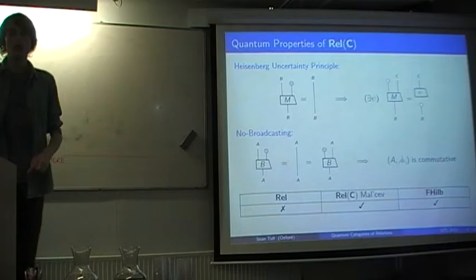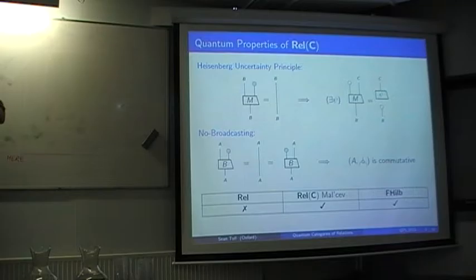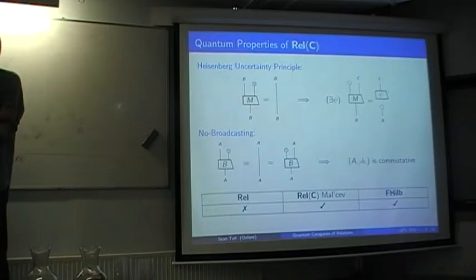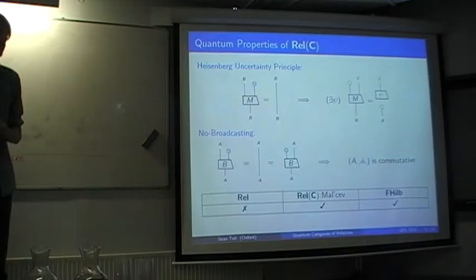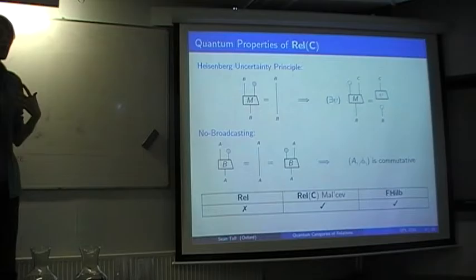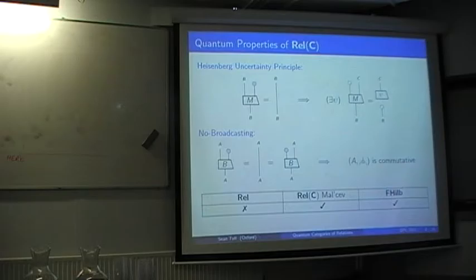Another result is the no-broadcasting theorem: if a system has a broadcasting map — a completely positive map from A to two copies of A such that discarding either output gives a pure channel straight across — then the system is classical, corresponding to having a commutative structure. Again, this holds in FHilb, in CP(FHilb), i.e., between C*-algebras; it doesn't hold in CP(REL); and it does hold in CP(REL(C)) when C is Malcev. So these REL(C) categories behave more quantum-like from a diagrammatic perspective — somewhere between REL and FHilb.